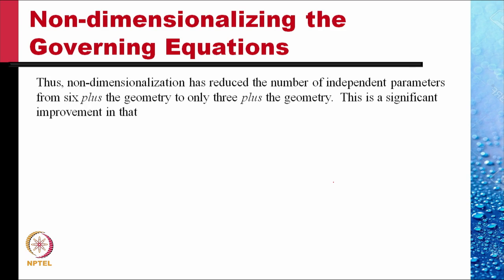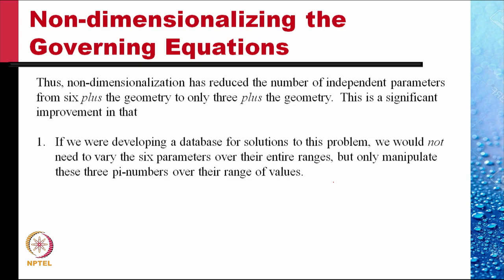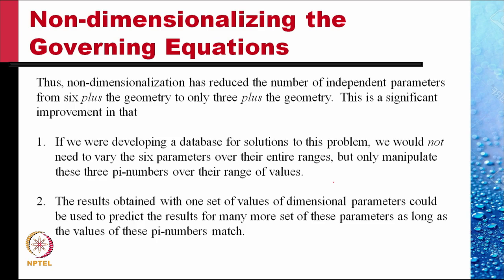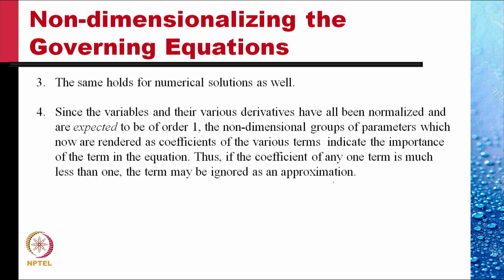This is a significant improvement. If we were developing a database for solutions to this problem, we would not need to vary the six parameters over their entire ranges, but only manipulate these three pi numbers over their ranges of values. The results obtained with one set of values of dimensional parameters could be used to predict the results of many more sets of parameters, as long as the values of the three pi numbers match. The same holds for numerical solutions as well, not just experimental solutions.